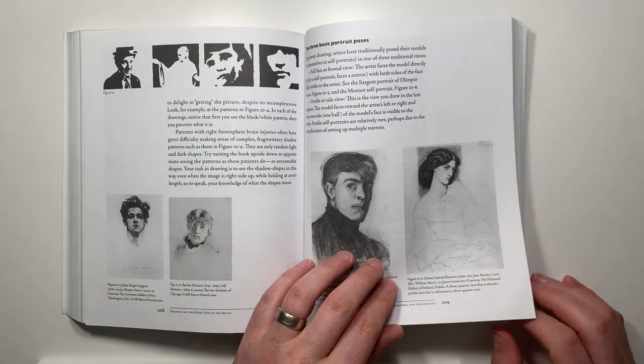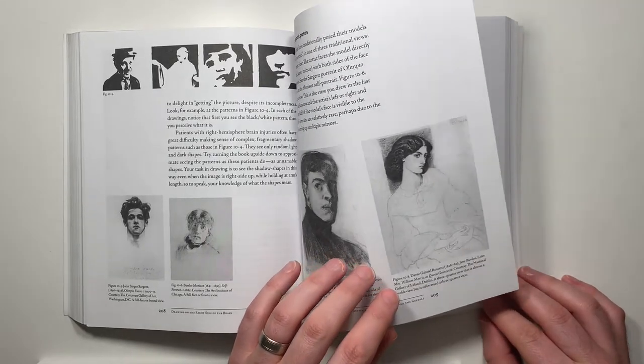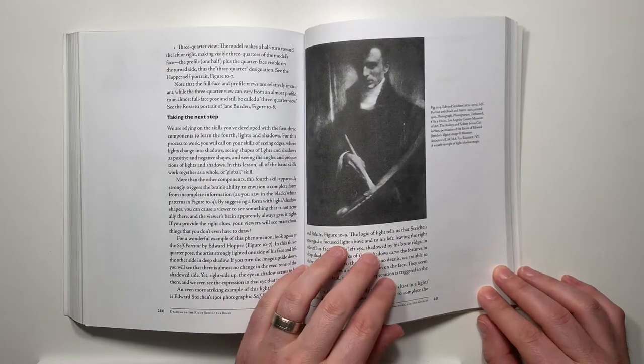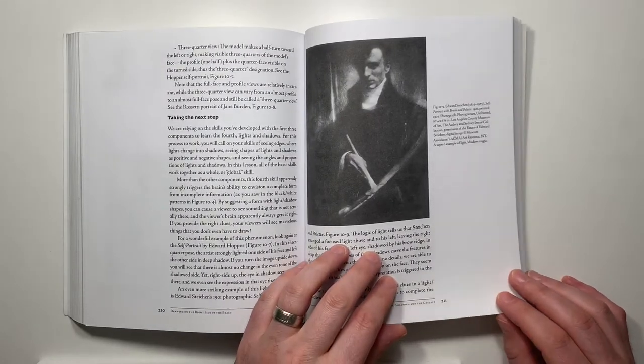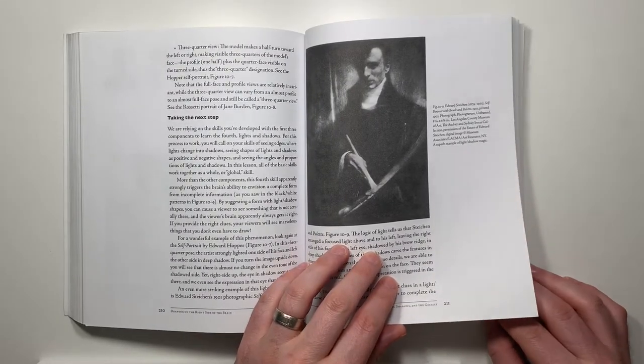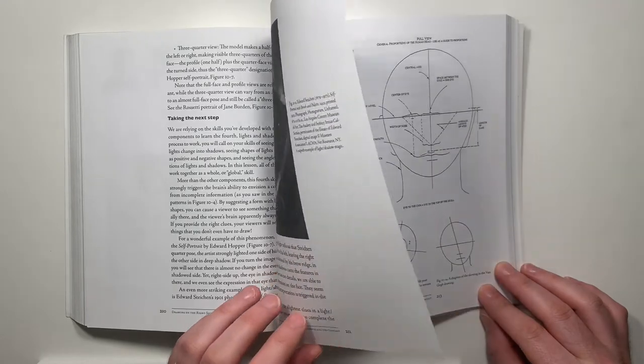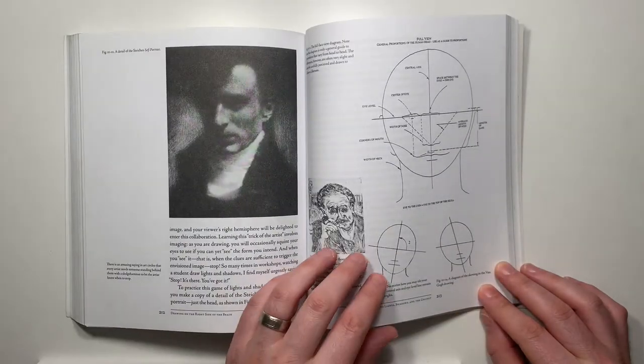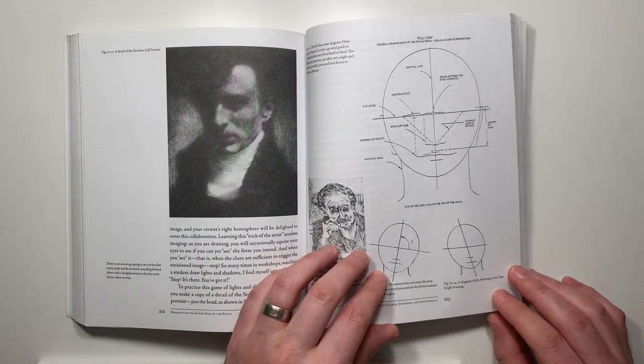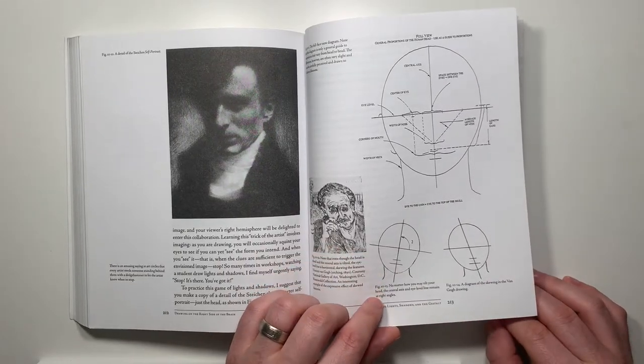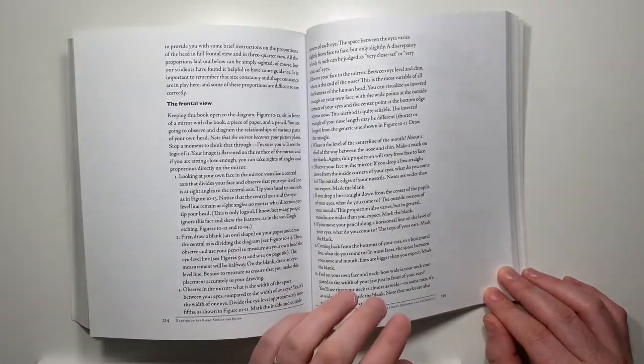Ms. Edwards explains that drawn objects look truly three-dimensional when you get the lights and shadows right, which requires an understanding of light logic. Light logic breaks down all the varying shades of light and dark into four aspects: highlight, cast shadow, reflected light, and crest shadow.